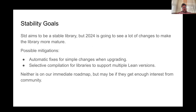I've mentioned stability a few times. For 2024 it's still an aspirational goal — we will need to make changes as the library matures — and we're looking at providing automatic fixes, deprecation warnings, selective compilation, to eventually break apart the tight relationship between Lean core and the standard library features.